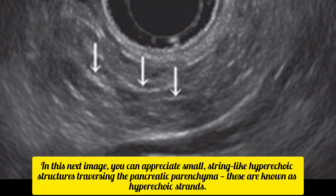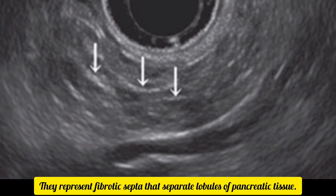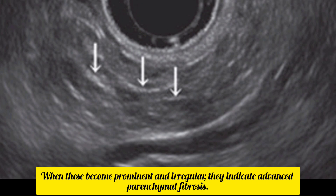In this next image, you can appreciate small, string-like hyperechoic structures traversing the pancreatic parenchyma. These are known as hyperechoic strands. They represent fibrotic septa that separate lobules of pancreatic tissue. When these become prominent and irregular, they indicate advanced parenchymal fibrosis.